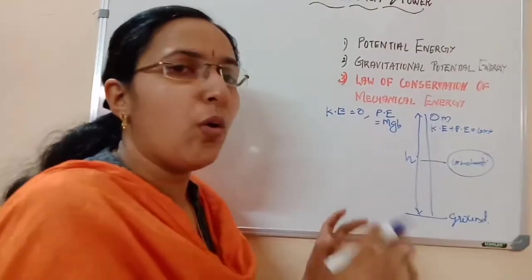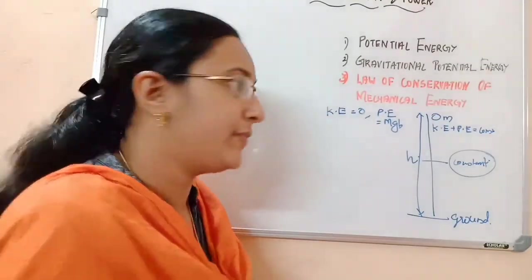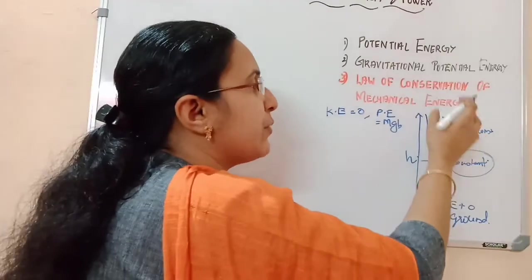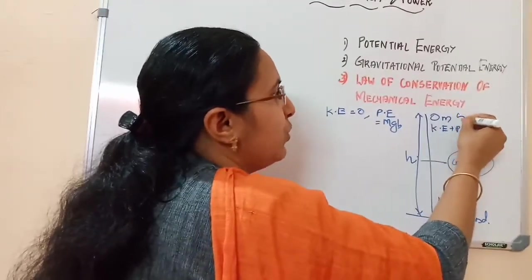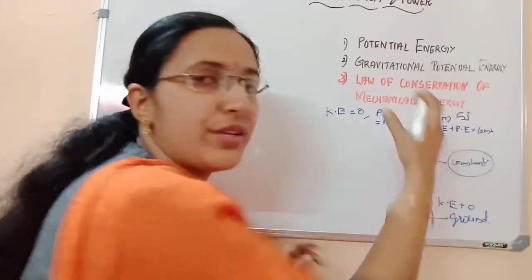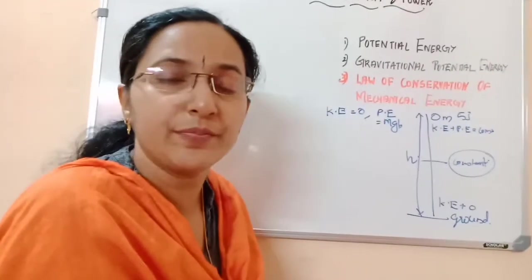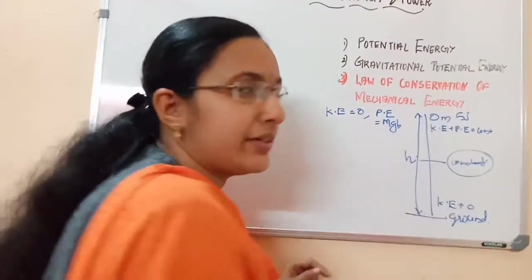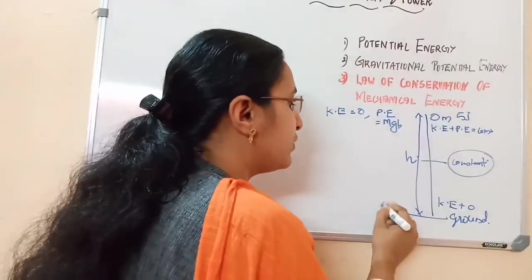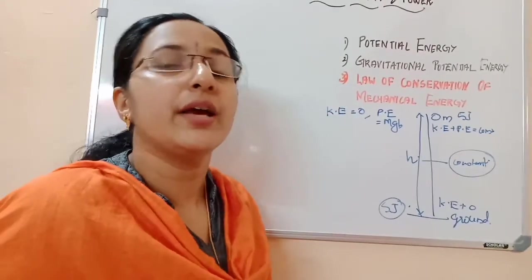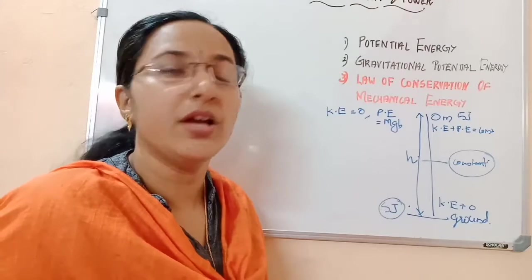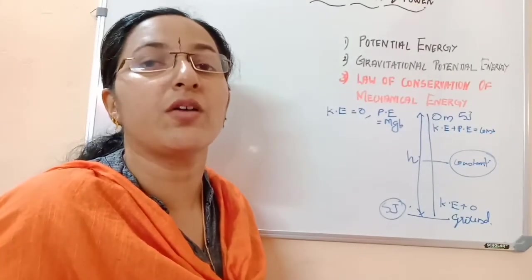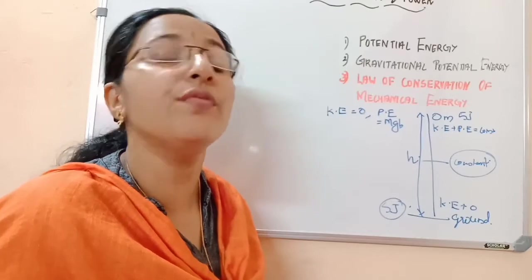When it reaches the ground, all gravitational potential energy is converted to kinetic energy — kinetic energy will be there and potential energy will be zero. For example, suppose the potential energy at the top is 5 joules; when it reaches the ground, all that gravitational potential energy is changed to kinetic energy, so the kinetic energy at the ground will also be 5 joules. This states the law of conservation of mechanical energy: the sum of potential energy and kinetic energy is constant.